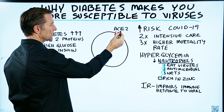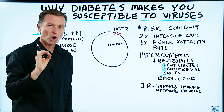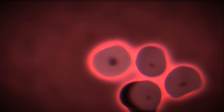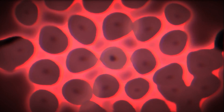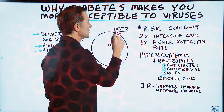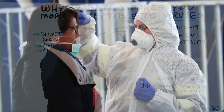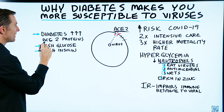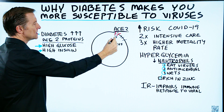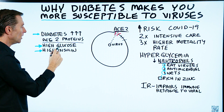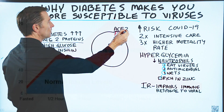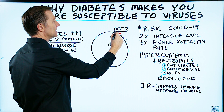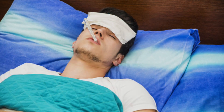The virus enters the cell through your own body's receptor — the ACE2 receptor. It goes in there and starts to replicate. The more ACE2 receptors you have on your cells, the higher the susceptibility to this virus. Diabetics have a lot more ACE2 receptor proteins on their cells. People with high blood glucose have more ACE2 receptors, and people with higher amounts of insulin also have higher amounts of these receptors. This is why they're more susceptible to viruses.